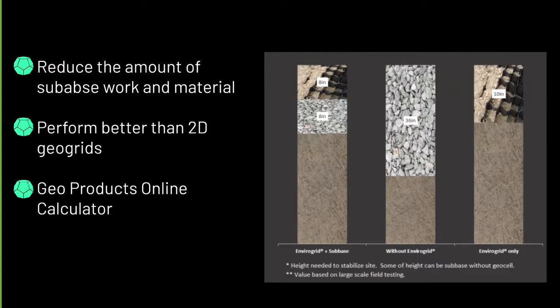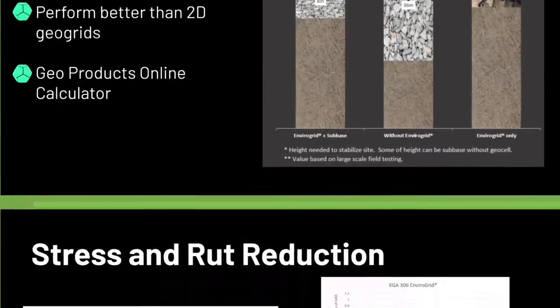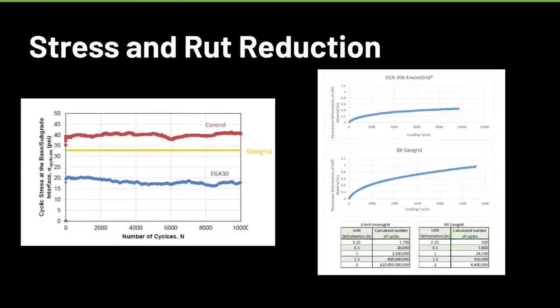You can see there's a huge labor savings in being able to not have to dig as much, not have to bring in as much material, and also not have to use as much high-quality material in your application. With GeoCell, you can use sand or any other locally sourced drain material as long as it doesn't have clay content in it.